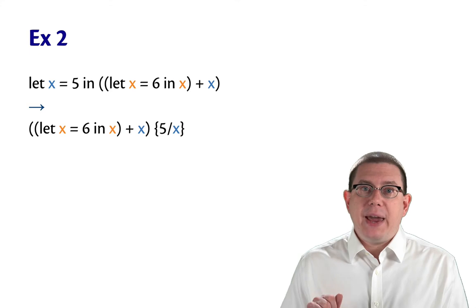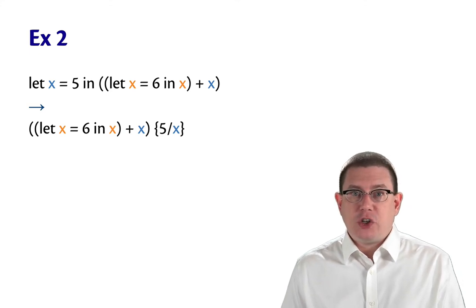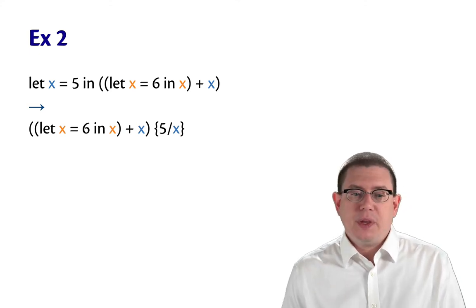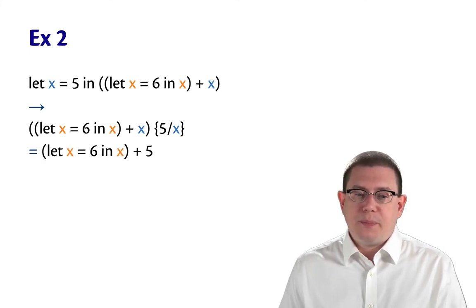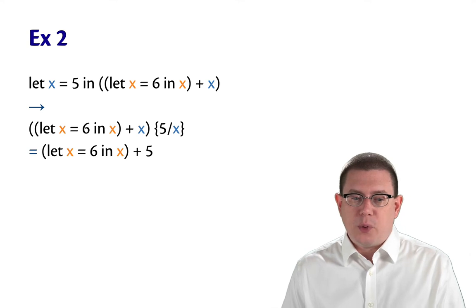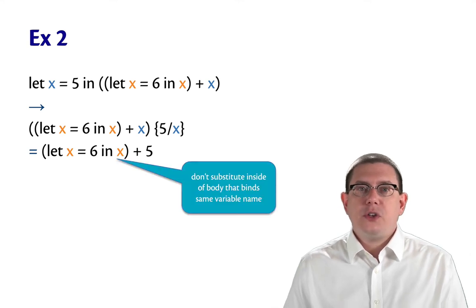First, by taking that binding expression 5, which is already a value, and substituting it for blue x. So that means that we need to replace the occurrence of that blue x with 5.